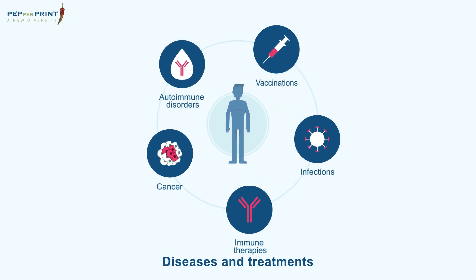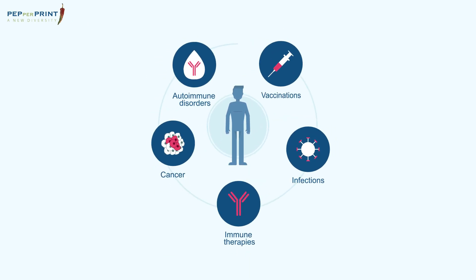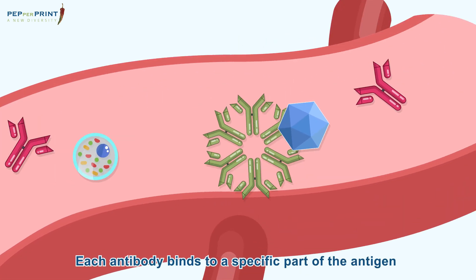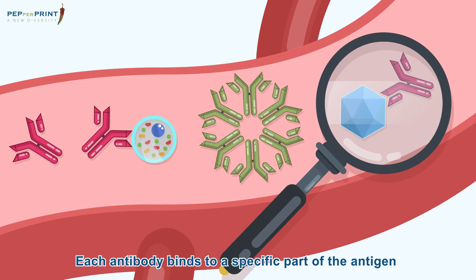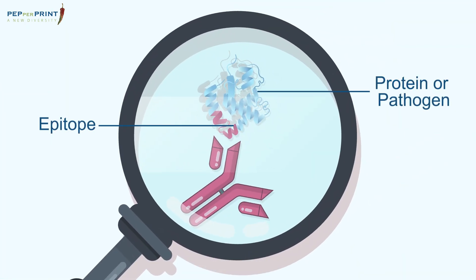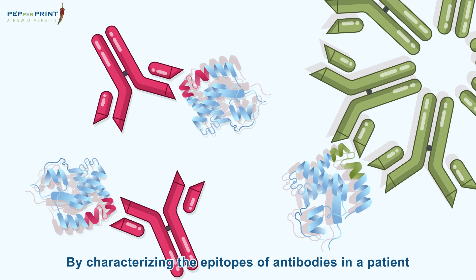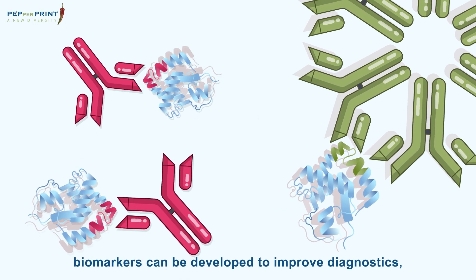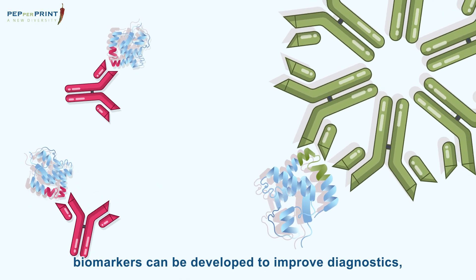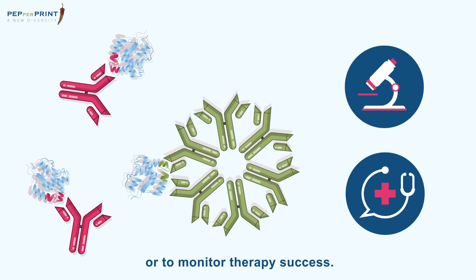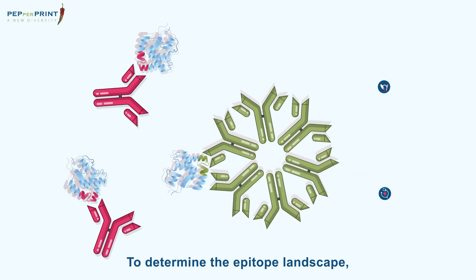Diseases and treatments lead to changes in a patient's antibody repertoire. Each antibody binds to a specific part of the antigen called the epitope. By characterizing the epitopes of antibodies in a patient, biomarkers can be developed to improve diagnostics or to monitor therapy success.